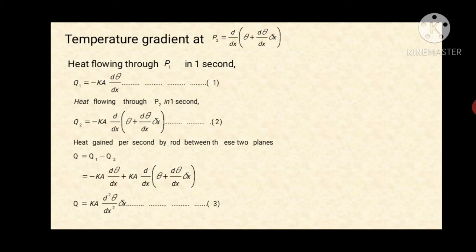Q is equal to Q1 minus Q2, the difference between these two. So it equals minus KA·(dθ/dx) plus KA · d/dx of [θ + (dθ/dx)·Δx]. If we simplify this equation, the minus KA·(dθ/dx) term and plus KA·(dθ/dx) term cancel. So we get equation three.